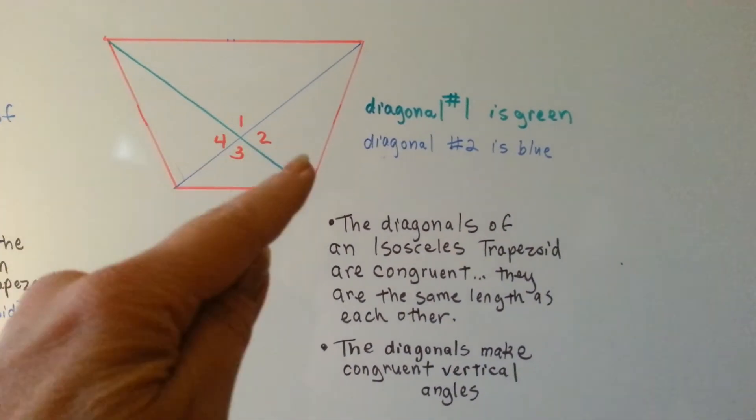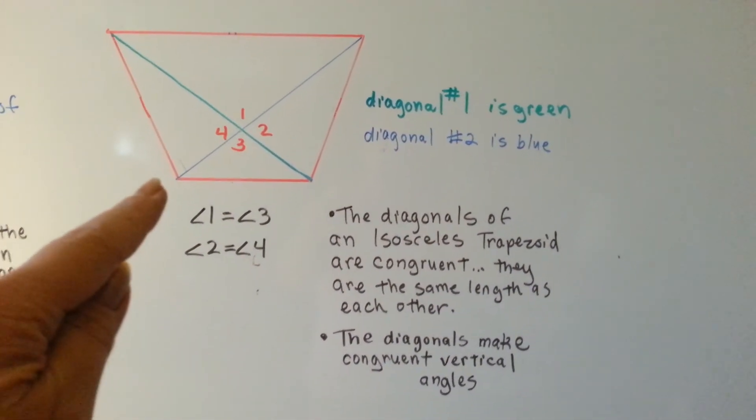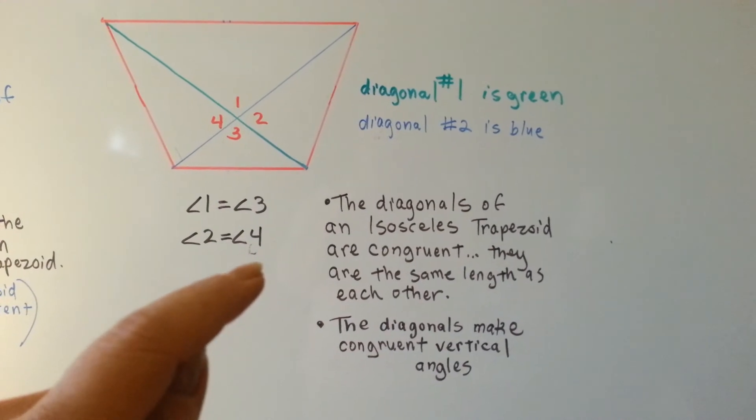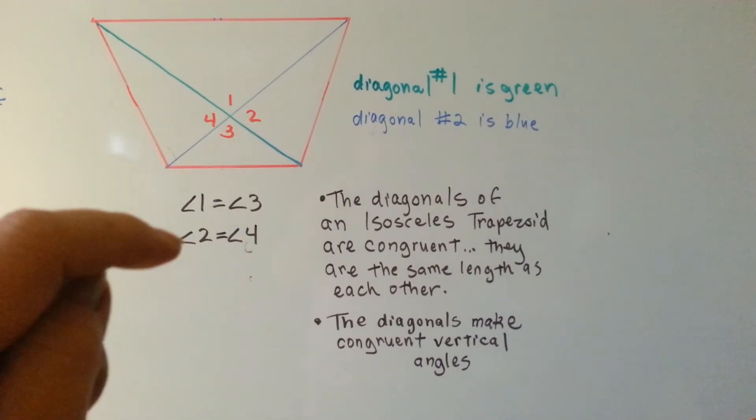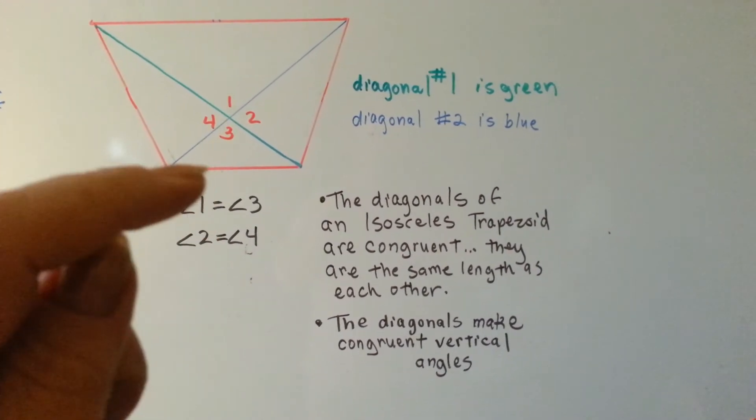The diagonal number one is green and diagonal number two is blue, and you can see that the diagonals are congruent. They're the same length as each other, and they make congruent vertical angles.